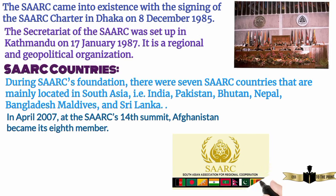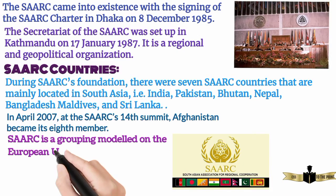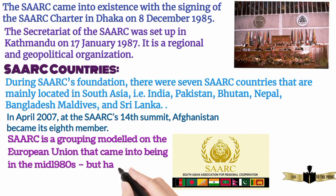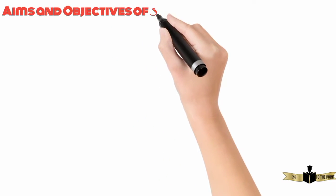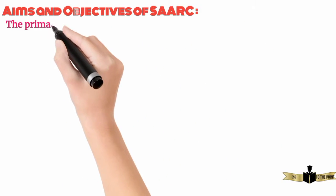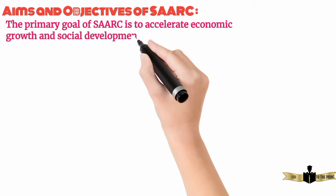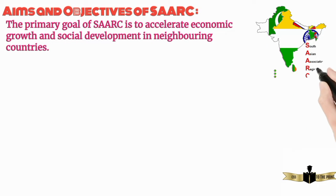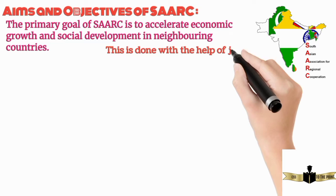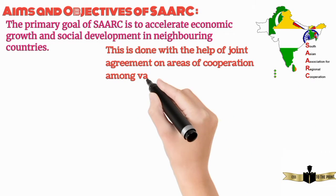SARK is a grouping modeled on the European Union that came into being in the mid-1980s, but has little to show for itself by way of regional or economic integration. The primary goal of SARK is to accelerate economic growth and social development in neighboring countries. This is done with the help of joint agreements on areas of cooperation among various countries.